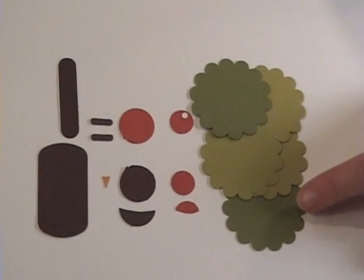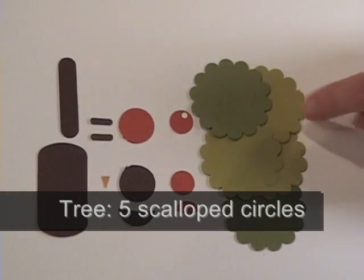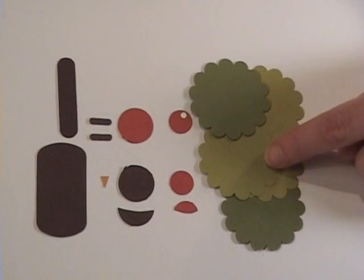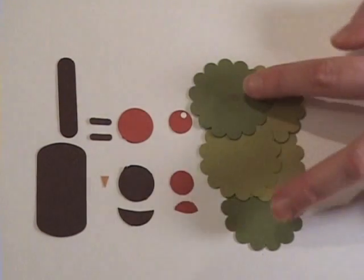What I've done here is my tree is going to be made up of scallop punches. I actually have some Kiwi Kiss textured paper along with Kiwi Kiss normal paper and two old olive scallop circles.